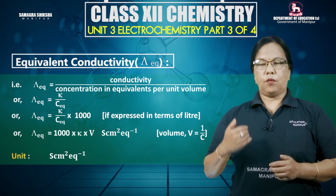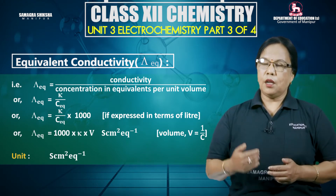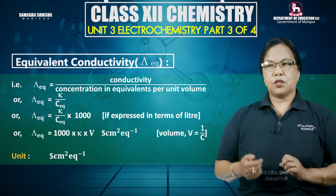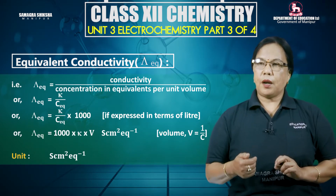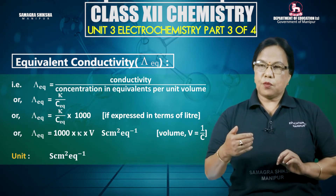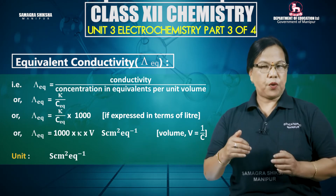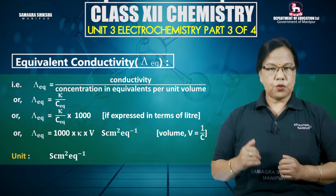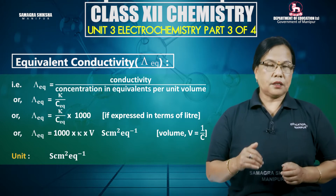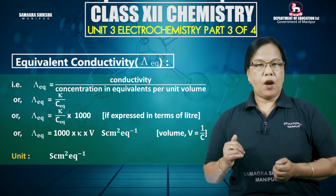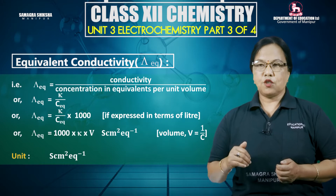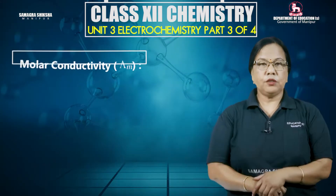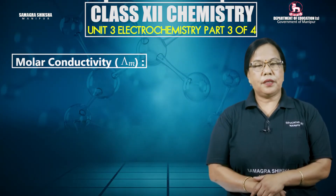Lambda equivalent equals 1000 kappa divided by concentration, in units of Siemens centimeter square per equivalent. The unit of equivalent conductivity is Siemens centimeter square per equivalent.